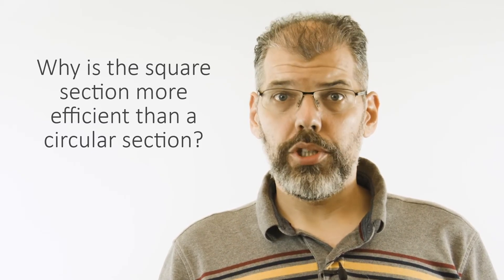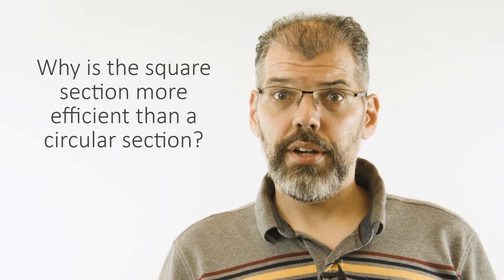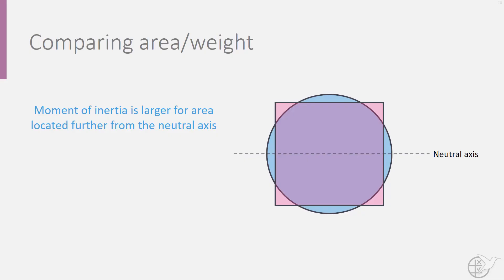Can you understand why this is? Well, remember that the moment of inertia measures the distribution of area in a cross-section around its neutral axis. If we look at the circular section,